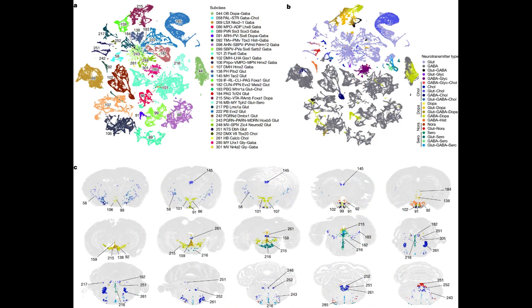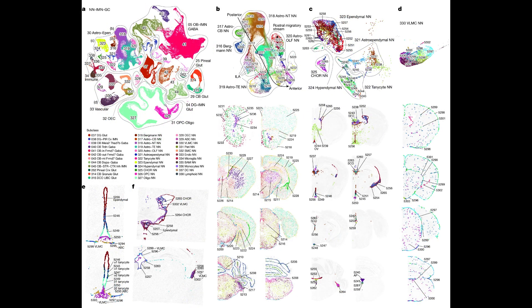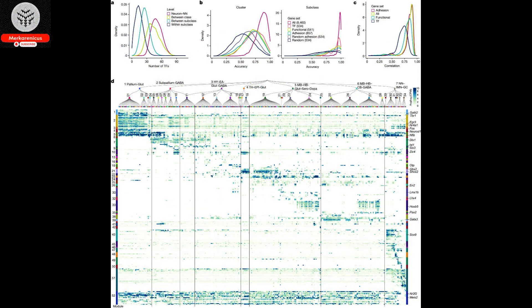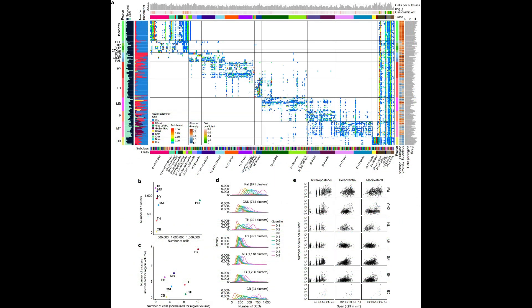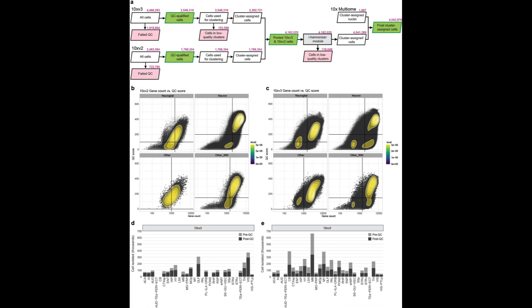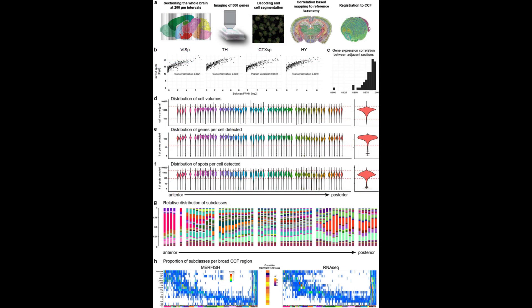This intricate blueprint serves as a guide for understanding the initiation and transmission of chemical signals in various regions of the brain, which ultimately form the foundation for the operation of brain circuits and the overall functionality of the brain. According to John Ngai, PhD, director of the NIH Brain Initiative, this product stands as a testament to the remarkable power of this groundbreaking collaboration, setting the stage for further advancements in precision brain treatments.